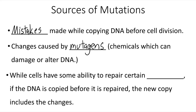Mutagens or carcinogens can cause mutations. While cells have some ability to repair certain types of errors in their DNA, if the DNA is copied before that repair can take place, the new copy includes those changes and those changes become permanent within that cell's genetic material.